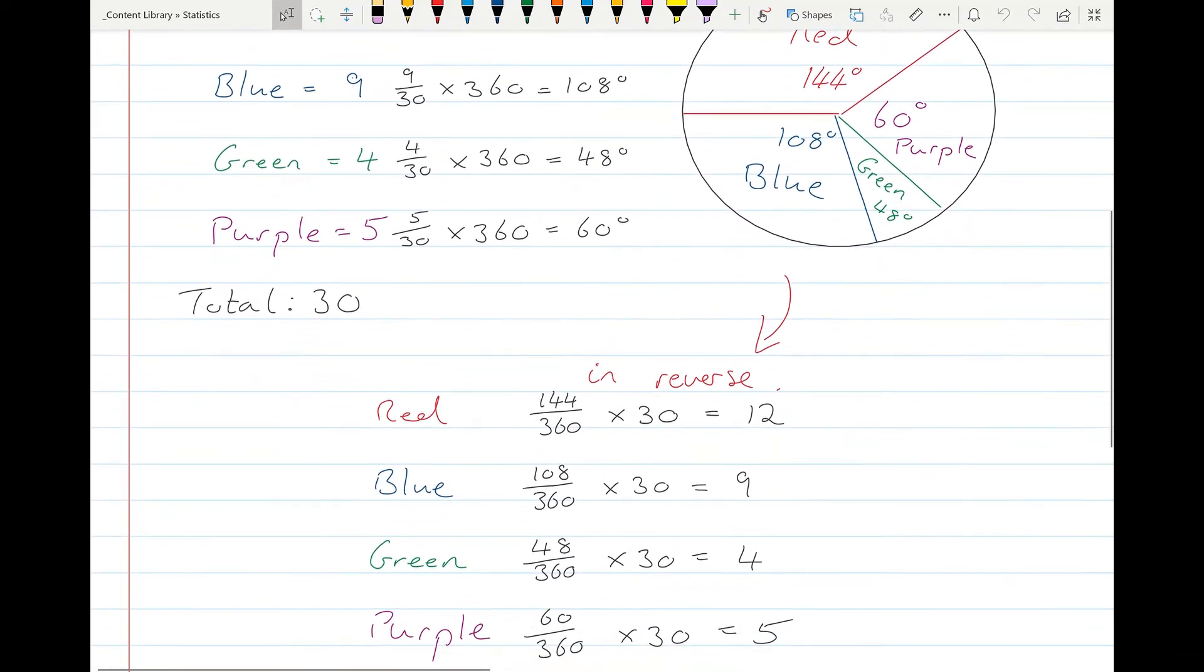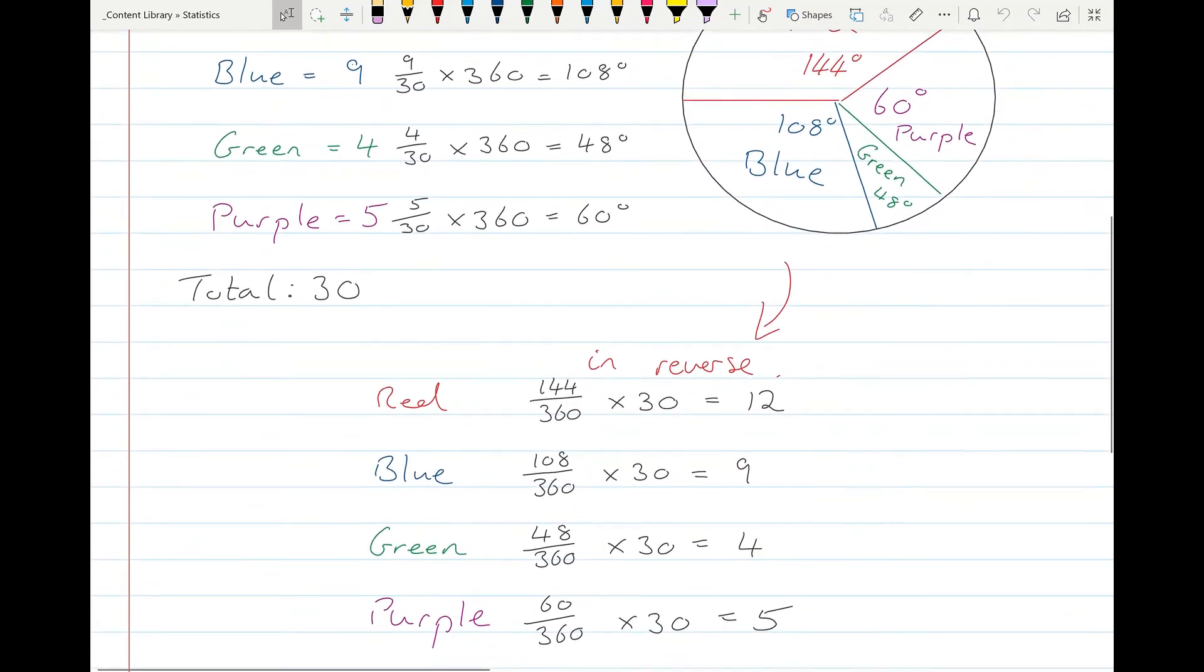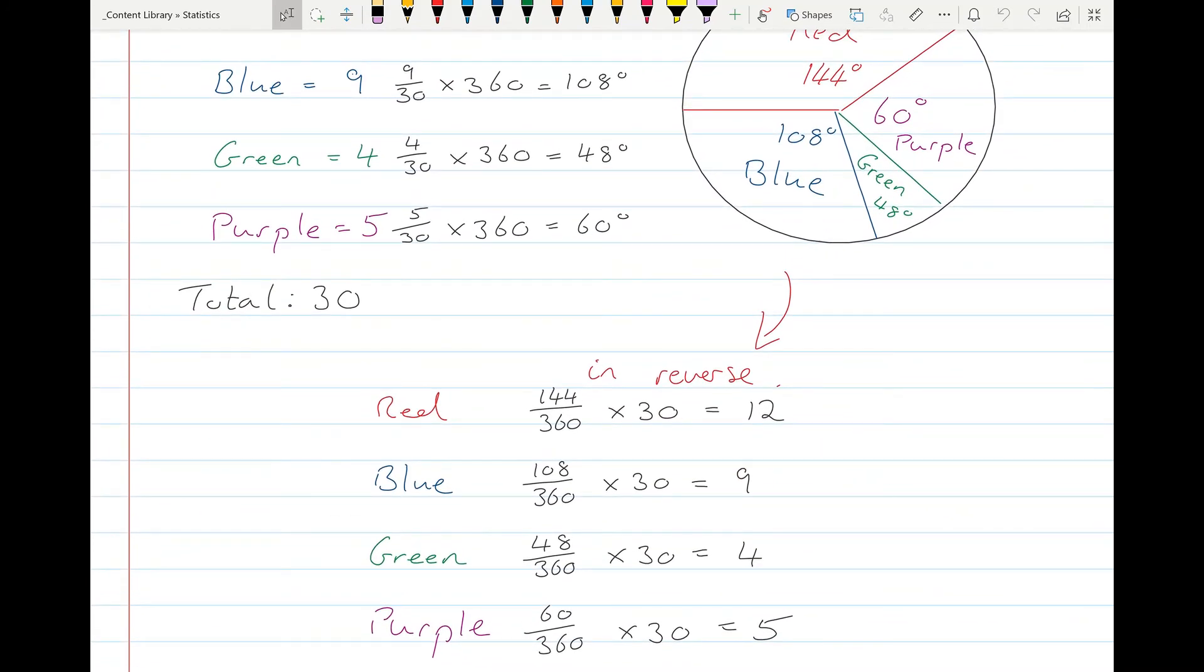If we were to come back then, if we were given the number of degrees for each color and wanted to find out how many that was, well red was 144 degrees out of 360, so 144 over 360, and there was 30 selections, so we multiply that fraction by 30 and it comes back to be 12, so we know there was 12 selections for red.